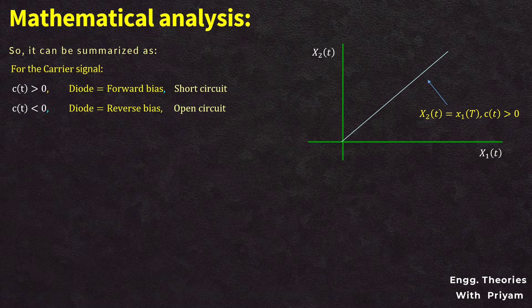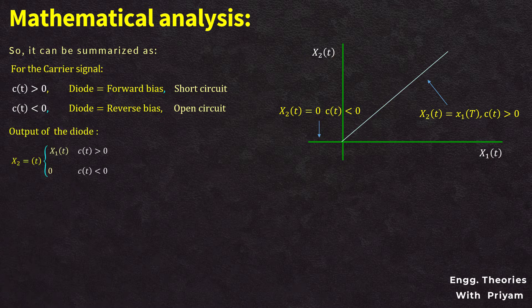When the carrier signal c(t) < 0, the diode is reverse biased, replaced by an open circuit, and does not allow x1(t) to pass. So the output of the diode, x2(t), equals x1(t) when c(t) > 0, and equals zero when c(t) < 0. It can be observed that the output voltage x2(t) varies periodically between x1(t) and 0 at a rate equal to the carrier frequency.